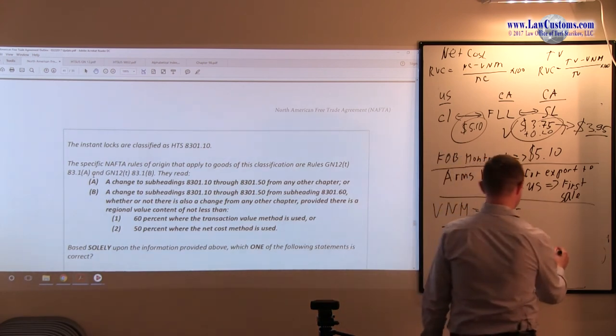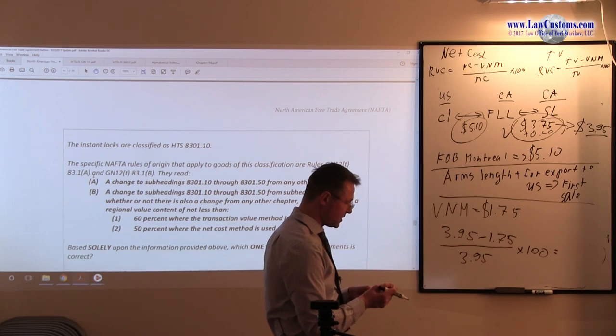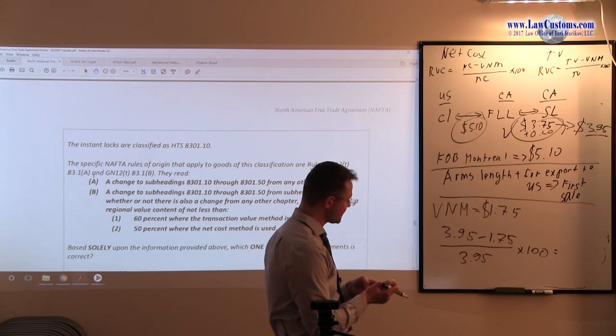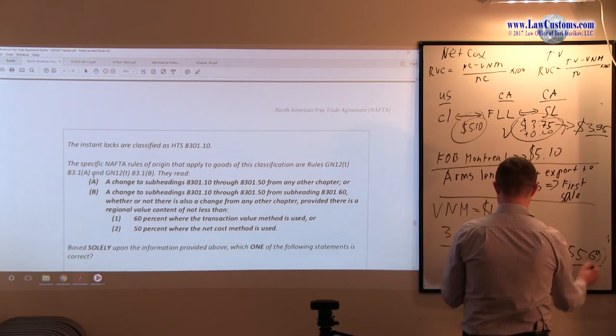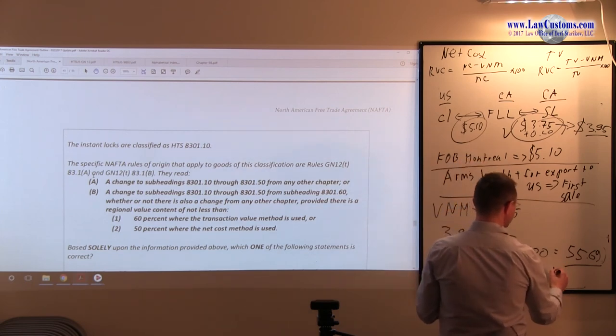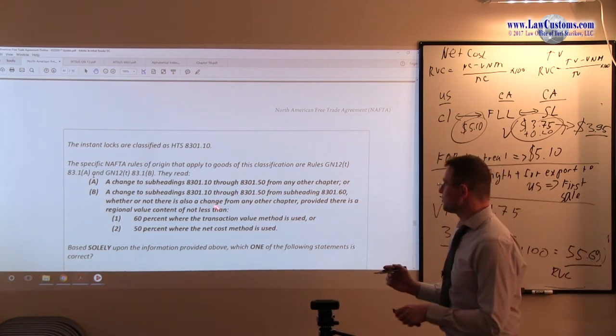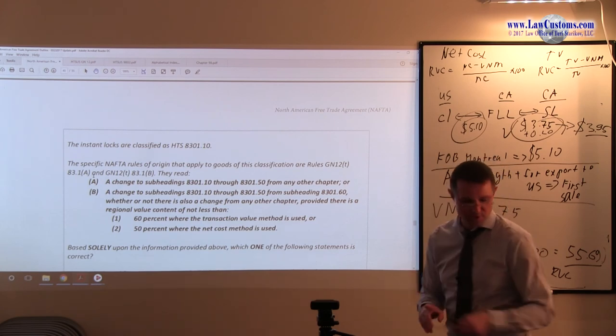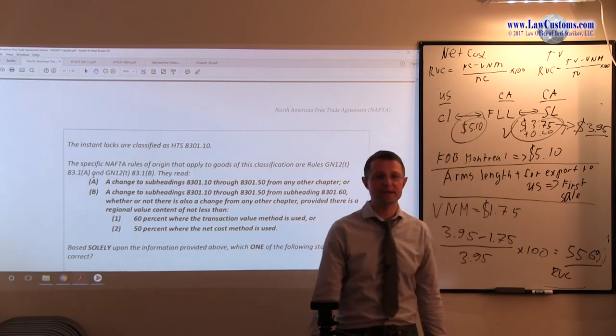So, ok, so, let's do it. I have a calculator here. So, $3.95 minus $1.75 is $2.2 divided by $3.95 is 0.556962 times 100. Well, yeah, I just should move the dots. 55.69. So, this is the RVC and the transaction value. But we must have 60%, not less than 60% of the transaction value. So, the question is, does it qualify? And it looks like 55.69 is the answer that no, it does not qualify.